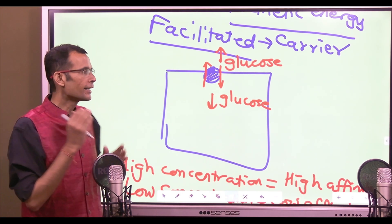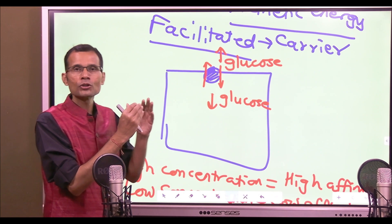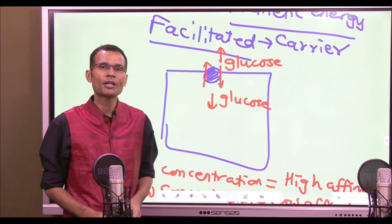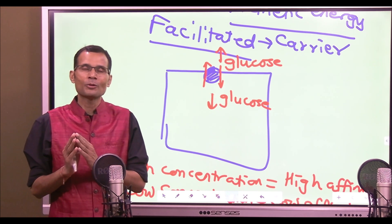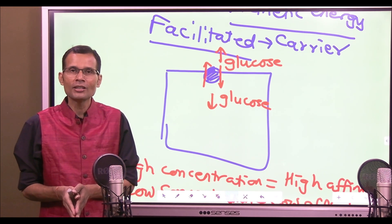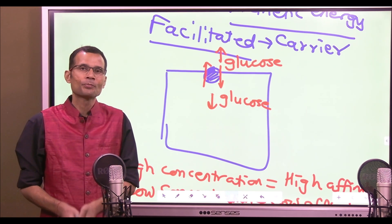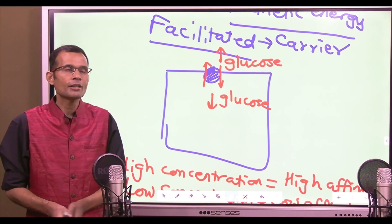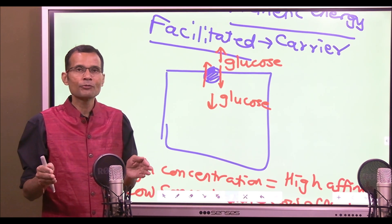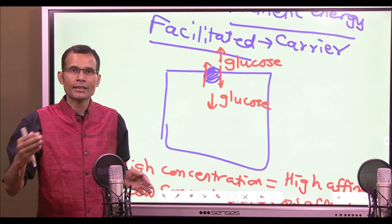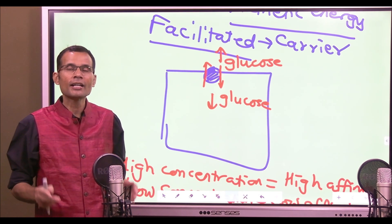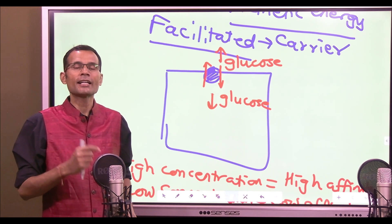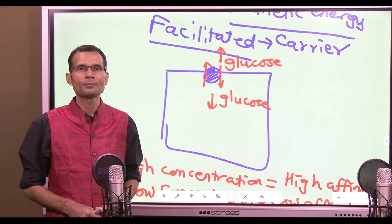So what I mean here is: without using the word 'net,' the concept will be only partly correct — a half-truth. Always say net transport always occurs downhill in the case of passive transports.